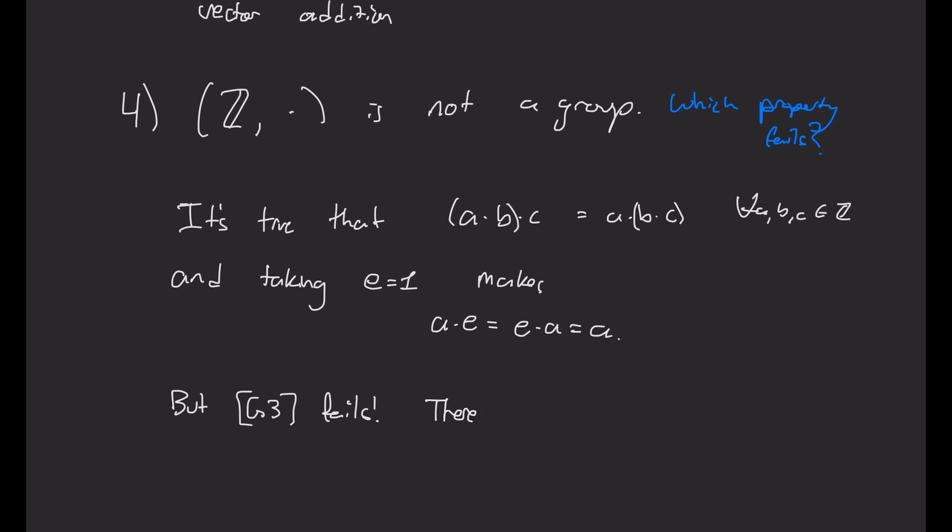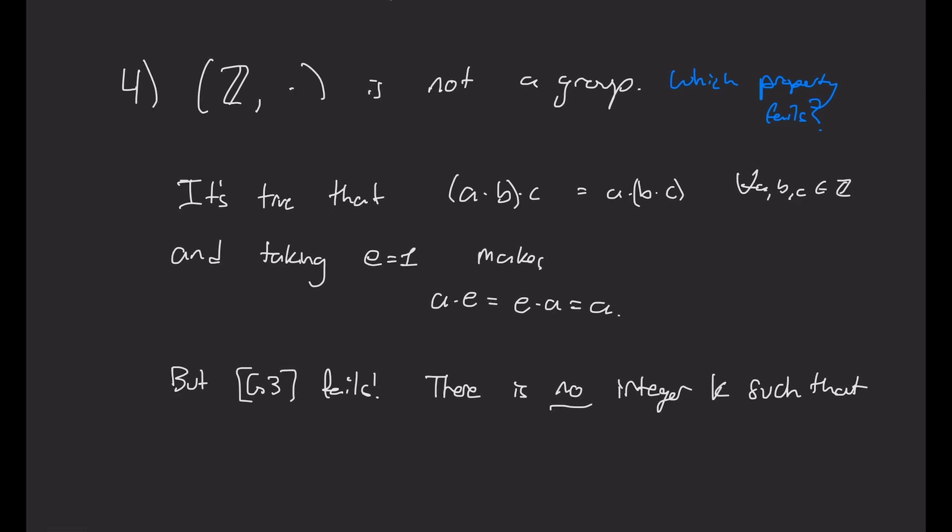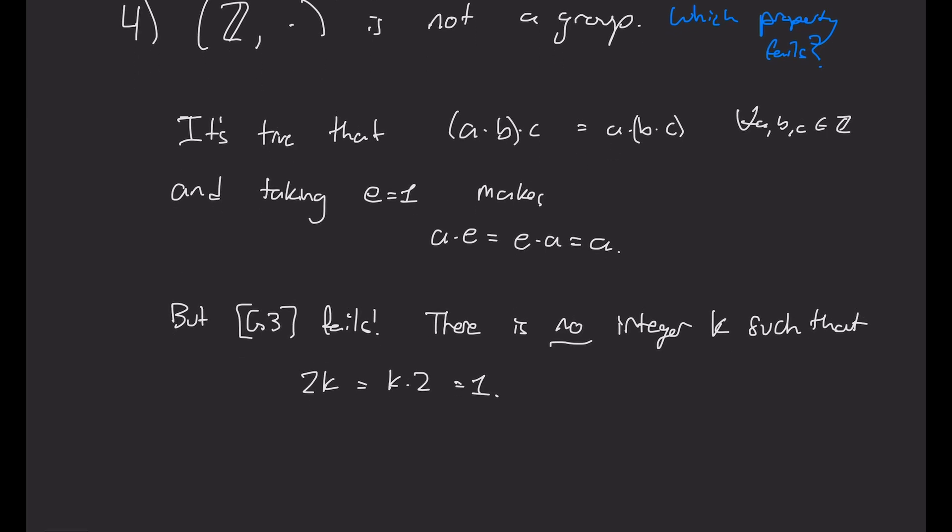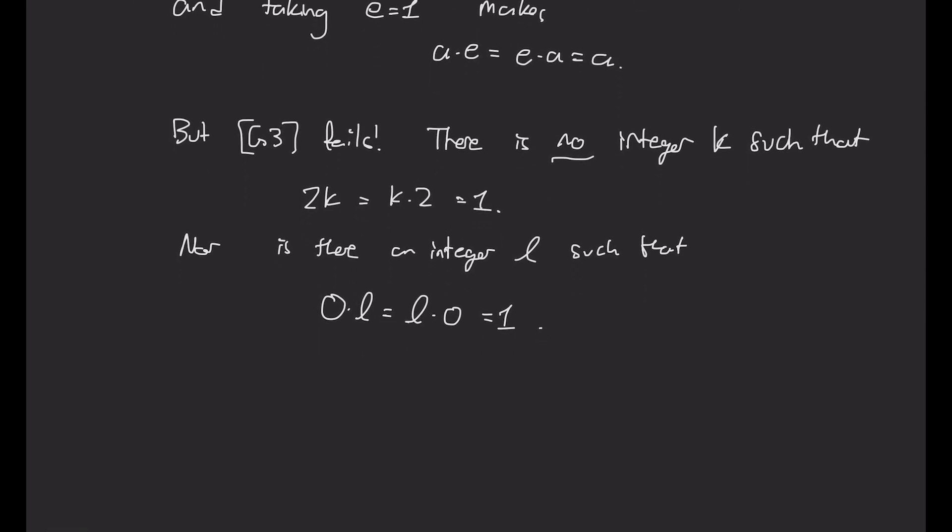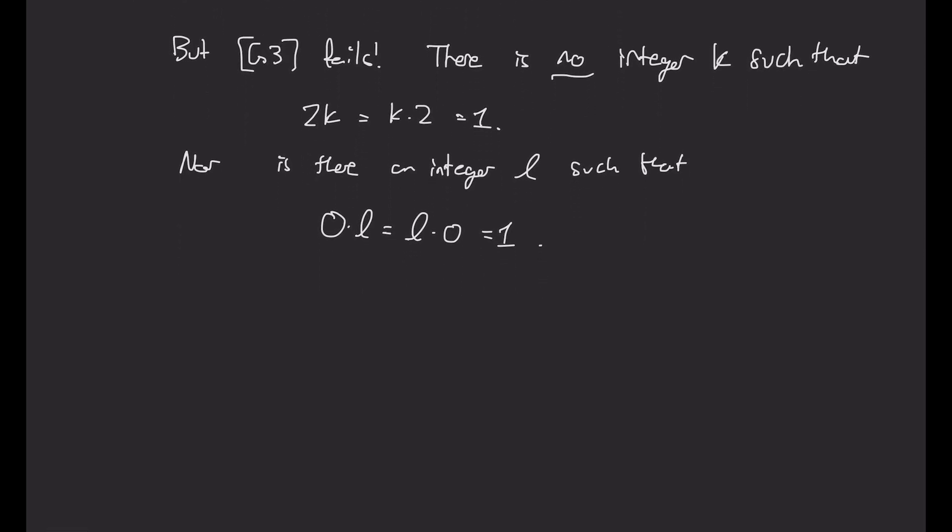And indeed, this one fails. So this is the inverse demand. So there's no integer inverse for 2, for example. So there's no integer k such that 2k is k times 2, which is 1. You can see that on the left I'll have an even number, on the right I'll have an odd number. There's no way to make that work in the integers. And maybe I'll point out another special case. There is no integer l such that 0 times l is l times 0, which is 1. Because on the left I'll have 0, on the right I'll have 1. 0 is not 1. So the integers fail to satisfy this inverse property.